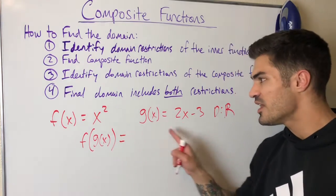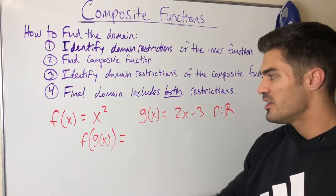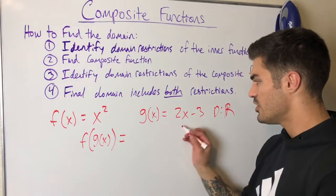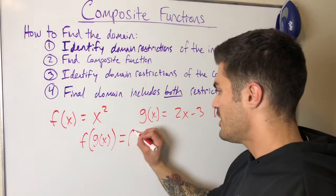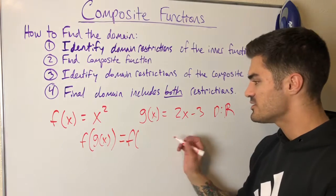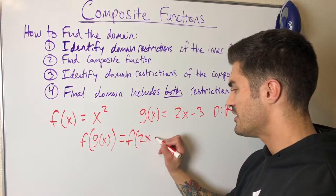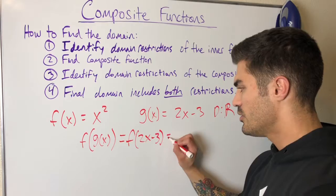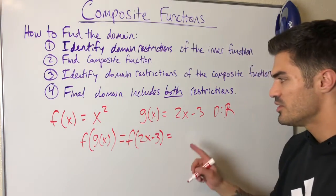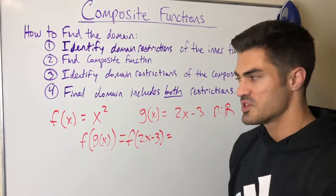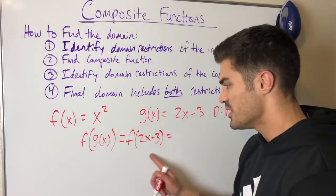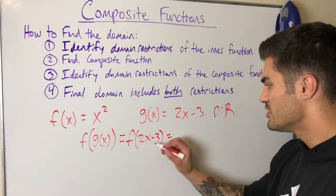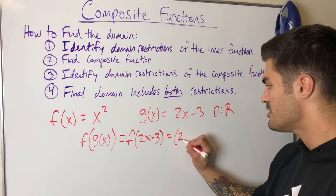Step two: find the composite function. Basically, I'm plugging g of x into f and simplifying. So I have f of g(x), which is 2x minus 3, and we're plugging this into f. Since f squares its input, 2x minus 3 gets squared.